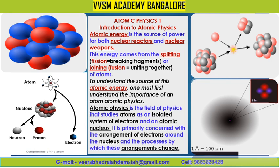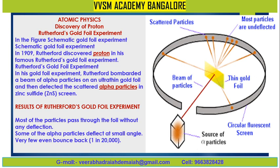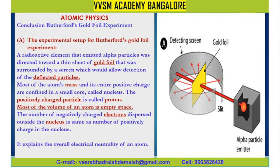Let us have a glance at atomic physics and nuclear physics. For the discovery of the proton, I would like to divert your attention to recollecting Rutherford's gold foil experiment. In 1909, Rutherford discovered the proton. In this atomic physics, the experimental setup includes deflected particles, a detecting screen, the gold foil, and the alpha particle emitter. Most of the volume of an atom is empty space. The number of negatively charged electrons outside the nucleus equals the number of positively charged particles in the nucleus, explaining the overall electrical neutrality of an atom.